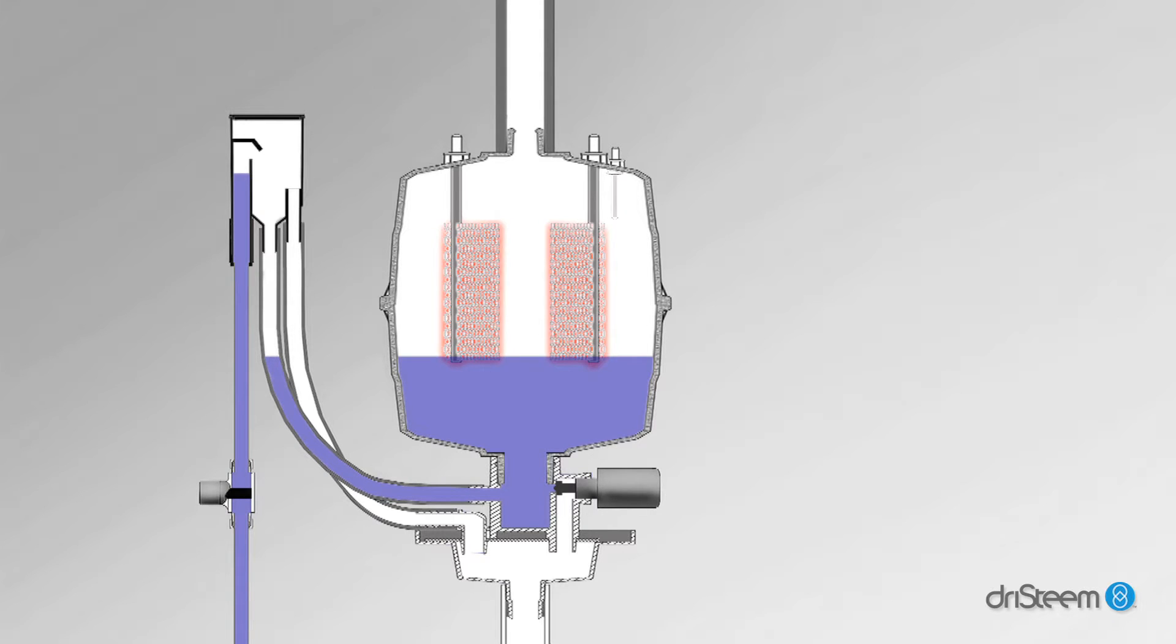If there is not enough electrical current between the electrodes, the fill valve opens and water enters the steam cylinder.